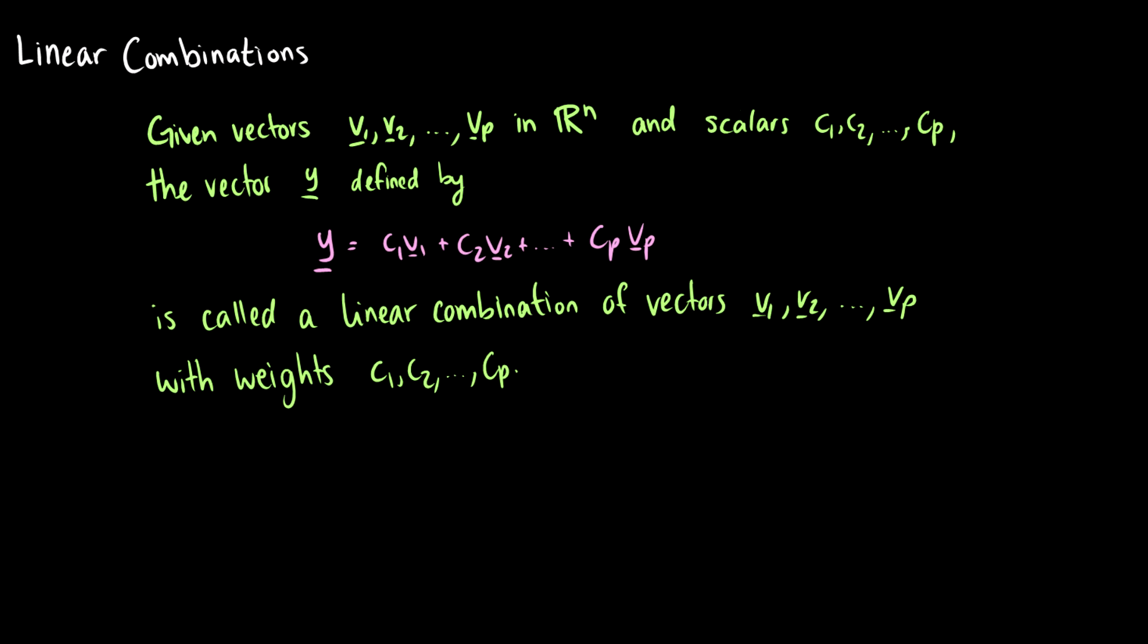In this video we're going to talk about linear combinations. We're going to get a little more notation heavy and into general concepts. So what is a linear combination? Given some vectors v1 through vp in the real numbers and scalars c1 through cp, we define a vector y as c1 times v1 plus c2 times v2 plus cp times vp. That's a linear combination with vectors v1 through vp with weights c1 through cp.